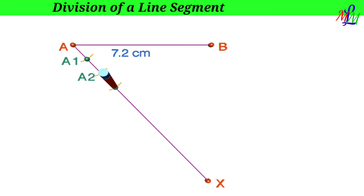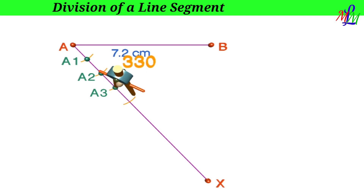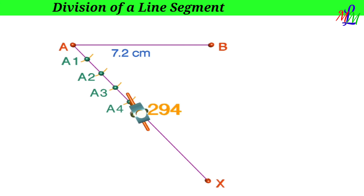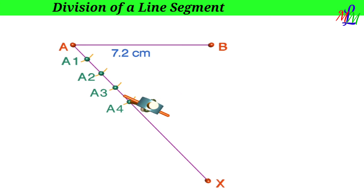Again with A3 as center, draw one more arc and identify the point of intersection as A4. We have to continue drawing arcs up to A8, since the sum of the parts in the given ratio is 8. All arcs are drawn with equal radius.